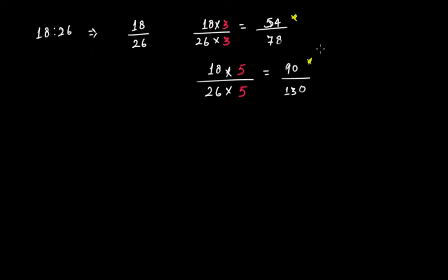We can find many equivalent ratios of a given ratio. But there is one more way — using division. Till now we've seen multiplication; now let's divide. If we divide both 18 and 26 by the same number, that number should be a common factor of both. Remember, it must be a common factor.